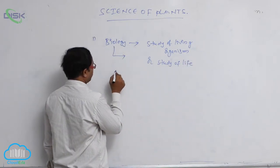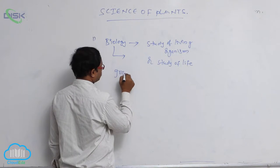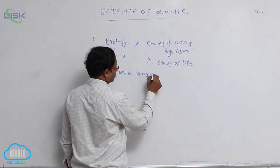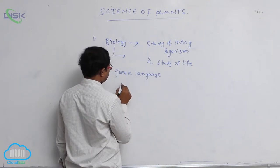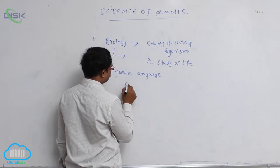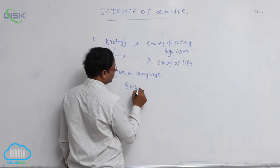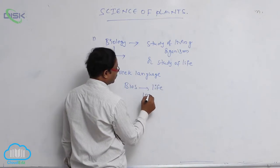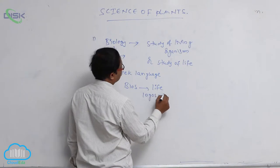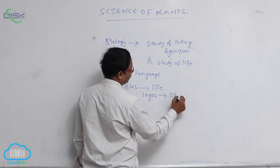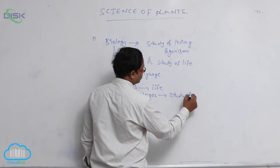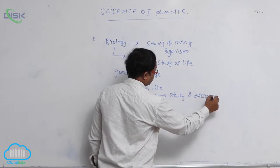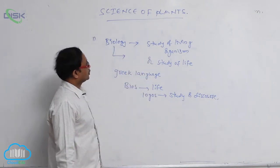Biology is derived from Greek language. It is derived from two Greek words: 'bios' means life, and 'logos' means study or discuss. That is known as biology.